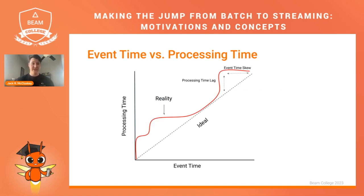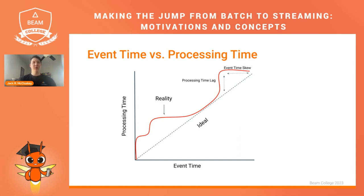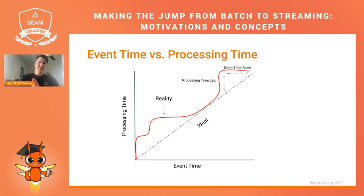This is a good visual for this. You have event time as your x-axis and processing time as the y-axis. In reality, the distance between processing time and event time compared to the ideal can vary — you can have a lot of data coming at once and your processing time starts to lag, then you catch up. The gap in processing time compared to the ideal is called processing time lag, and the gap in the x-axis of event time to the ideal is event time skew. You might see those terms on occasion.